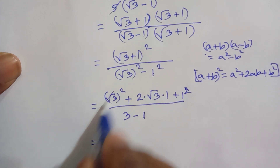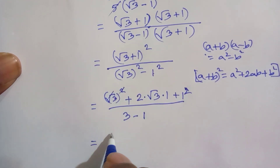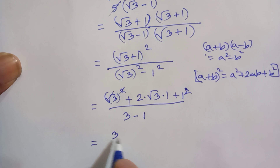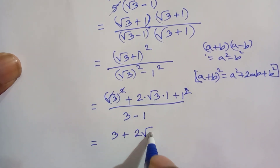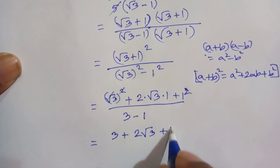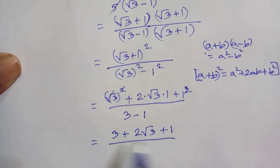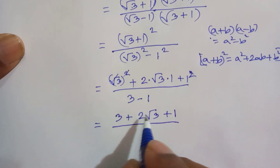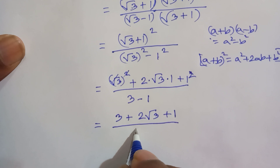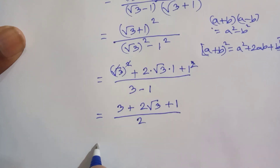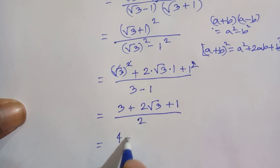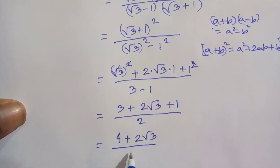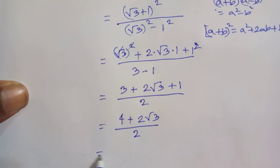The root and square cancel, leaving 3 plus 2 root 3 plus 1 in the numerator. The denominator becomes 3 minus 1 which is 2. So we have 3 plus 1 is 4, plus 2 root 3, over 2.